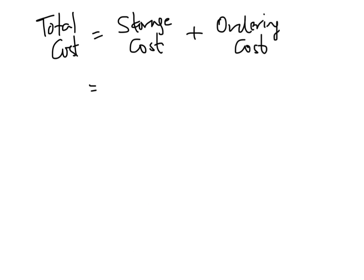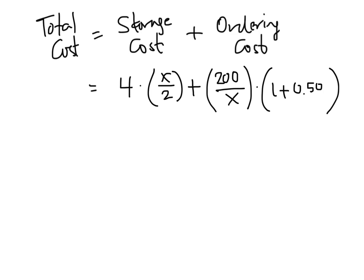So my total cost is going to be the storage cost plus the ordering cost. We just figured out that the storage cost is going to be 4 times x over 2, four dollars per bowling ball times x over 2, which is my average number of bowling balls that I have in my inventory. Now the ordering cost is going to be the number of orders, which is 200 over x, multiplied by the cost of each order. We're told in the problem that the orders cost a dollar plus 50 cents per bowling ball, and the number of bowling balls we buy is that lot size x. So it's going to be 50 cents times x, 50 cents per bowling ball, and x is the number of bowling balls. That's the lot size.